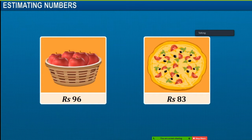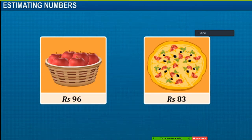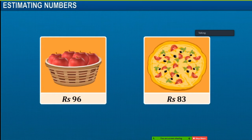Generally, when stating their prices, we may say that the first item costs around 100 rupees, and the second around 80 rupees. Since 96 is closer to 100, we say approximately 100 and not approximately 90. Since 83 is closer to 80, we say approximately 80 and not 90. This method of approximation is known as rounding off.